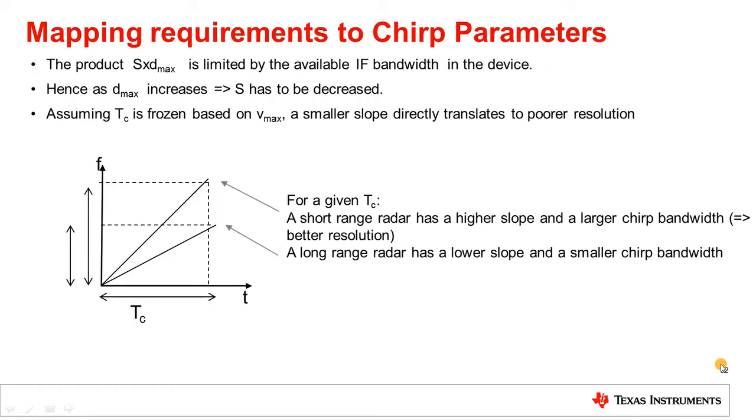This slide just elaborates on the inherent trade-off between the slope and the maximum distance, DMAX, that we alluded to earlier. The product of the slope and DMAX is limited by the available IF bandwidth in the device. Hence, as DMAX increases, the slope S has to be decreased. Assuming that the duration of the chirp, Tc, is frozen based on the maximum velocity requirement, a smaller slope directly translates to a poorer resolution. And that is illustrated here, where a smaller slope means that you span a lesser bandwidth in the same amount of time, and hence a poorer resolution.